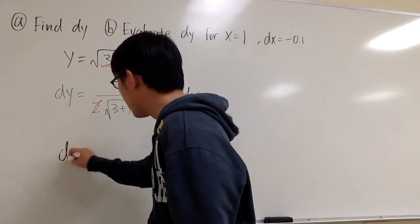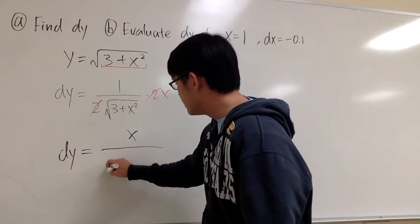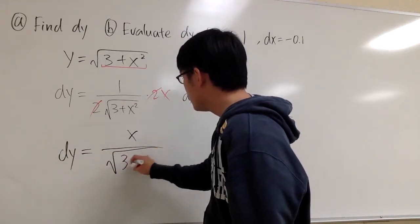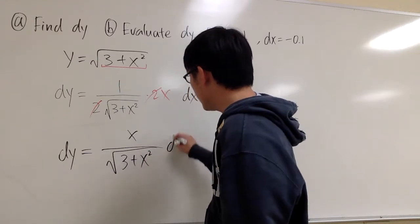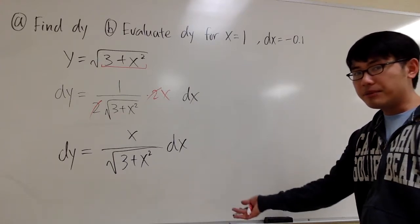So the first part, dy equals x dx on the top over square root of 3 plus x squared. That's dy.